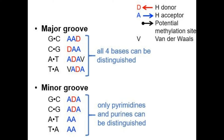Similarly we have adenine and thymine. But in the minor groove, the GC arrangement is placed in such a manner that there is excessive compactness and you can only differentiate between pyrimidines and purines. The purines are A and G — they contain two heterocyclic rings — and pyrimidines contain C, T, and C.